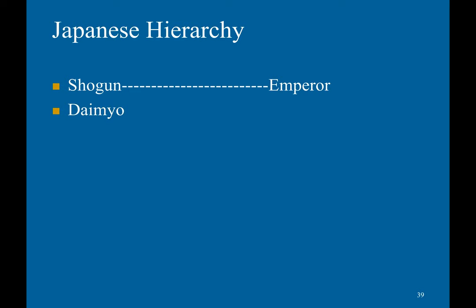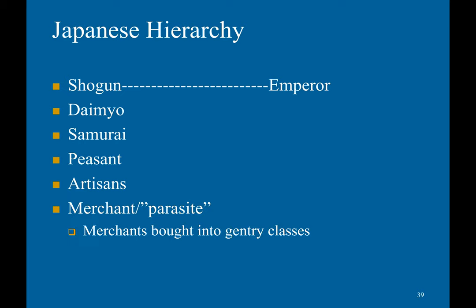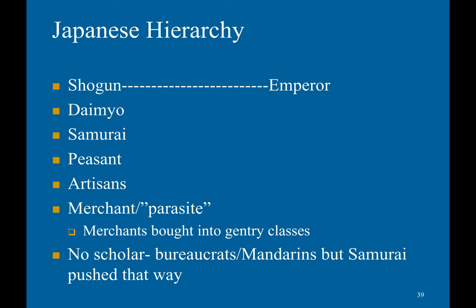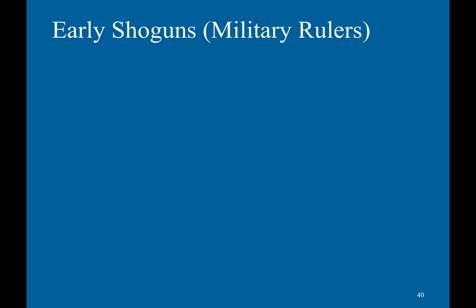Below the daimyo were the samurai warriors, then peasants, artisans, and merchants — who were also considered parasitic. However, merchants would often buy themselves into the gentry class. There were no scholar bureaucrats or Mandarins, but the samurai were pushed in that direction with the end of constant warfare.